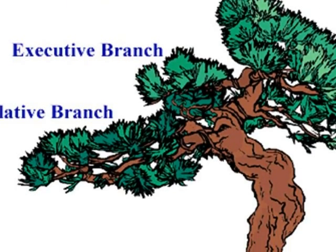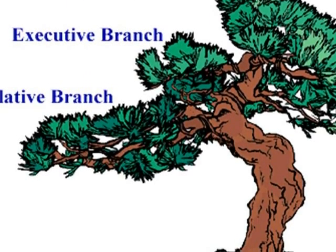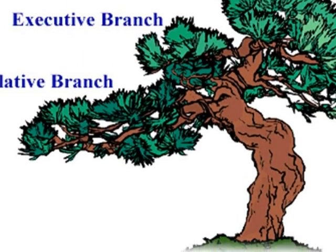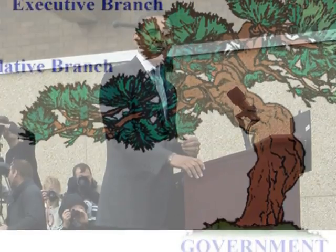What does each branch of the government do? The three branches are executive, legislative, and judicial.